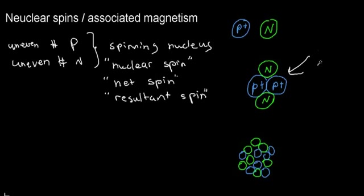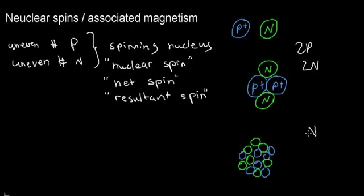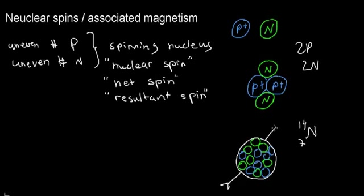Consider this helium nucleus — two protons, two neutrons. It does not fulfill the condition of having an uneven number of protons or neutrons, so we would not expect this nucleus to show any spin. Now consider nitrogen-14: it has protons and neutrons, and you can pause and count to verify — nitrogen-14 does fulfill this condition with an uneven amount of protons and neutrons, so we would expect it to show a spin. The arrow I draw represents the direction of the axis around which that nucleus spins.